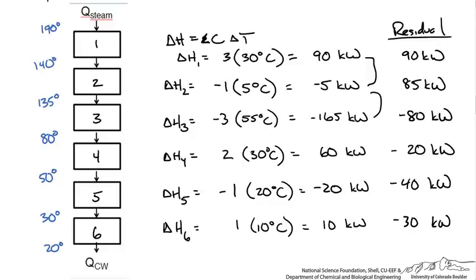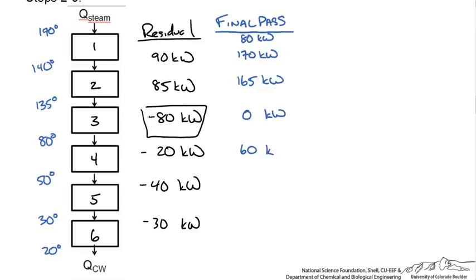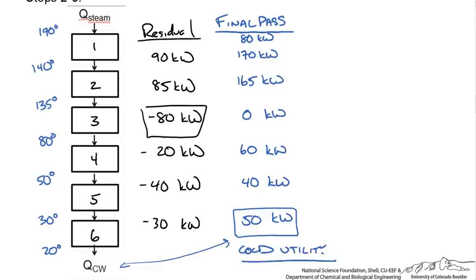The residual enthalpy profile tells us where the pinch point is. The pinch point is defined such that no energy is transferred across it, in order to minimize utility loads. We choose the most negative enthalpy value and take that as our hot utility load, adding it to the beginning of the block diagram. In a final pass through the temperature intervals starting with 80 kW, at the pinch point the value reaches zero. The residual enthalpy at the bottom gives our cold utility load. These hot and cold utility values are our MER targets.